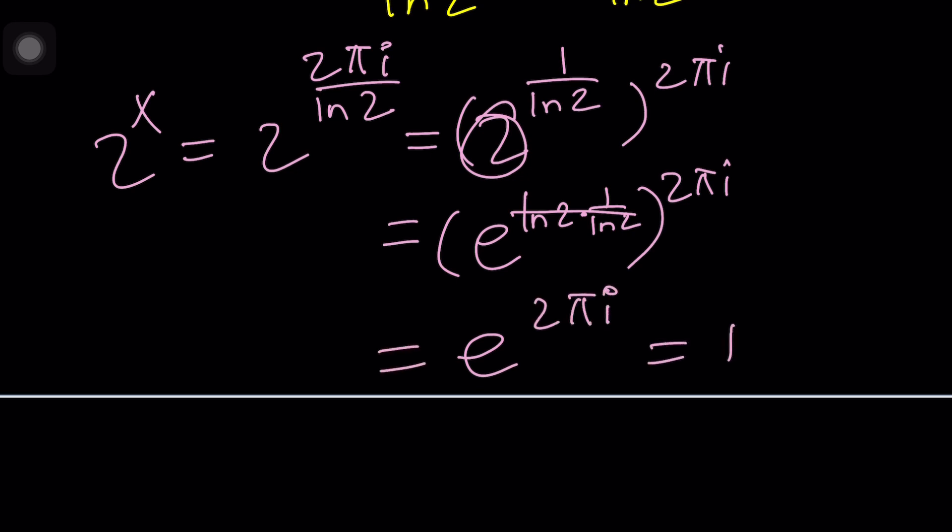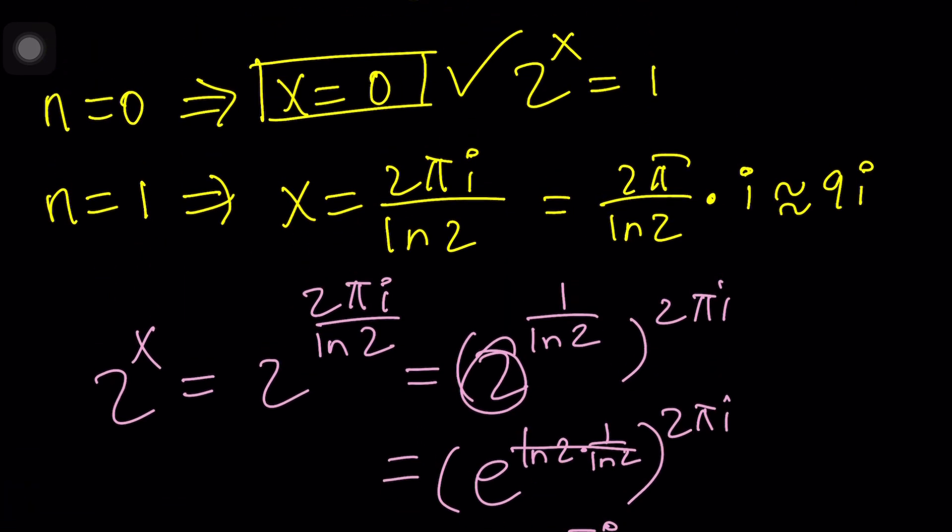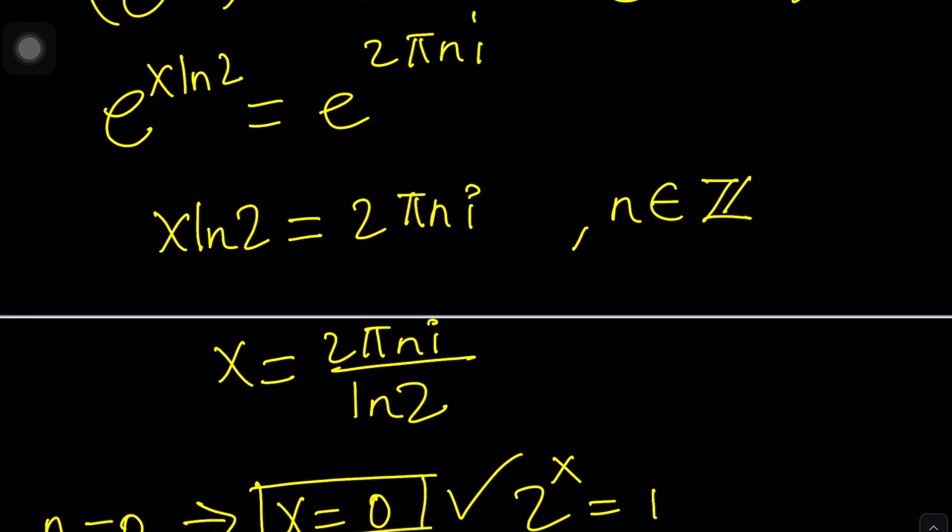Remember, we just talked about it. That is the complexified version of 1. So this satisfies the equation. Therefore, it is a solution. And the general solution is this one. Of course, x equals 0 is a special solution.